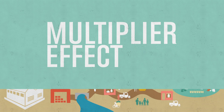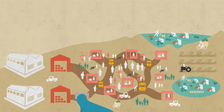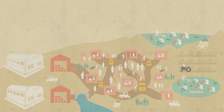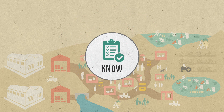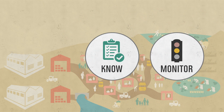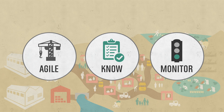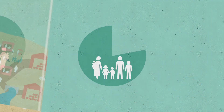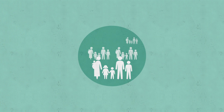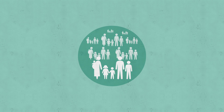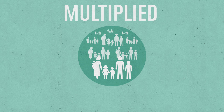It's worth remembering that not all markets are functioning after a crisis, and it's important that we know our local markets, monitor while we're delivering, and be agile enough to switch back to delivering with our own supply chains if the market takes a turn for the worse. But where markets are functioning, investing in the economic area connected to beneficiaries can have a greater, multiplied impact.